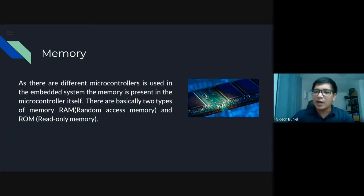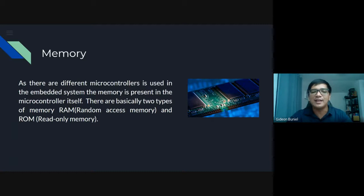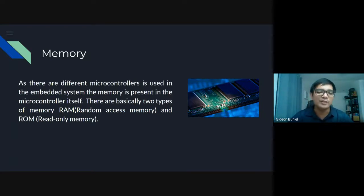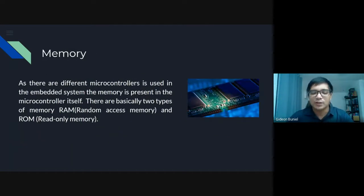From power supply to processor, now we go to memory — which is RAM. As there are different microcontrollers used in the embedded system, the memory is present in the microcontroller itself. There are basically two types of memory: random access memory and read-only memory. RAM is not permanent, but ROM is permanent — those are the familiar definitions of RAM and ROM.